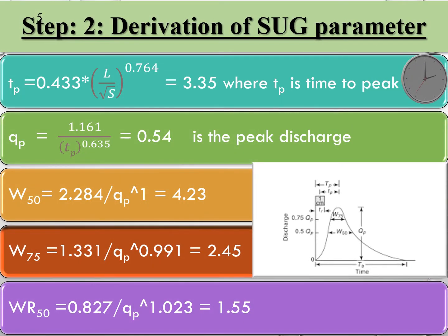In step 2, I have to derive the SUG parameters. SUG means Synthetic Unit Hydrograph, which is discharge versus time. As shown in the figure, there are certain parameters like qp (small qp and capital qp), W75, W50, tp, tb, and so on. The equations for these 8 parameters are fixed.